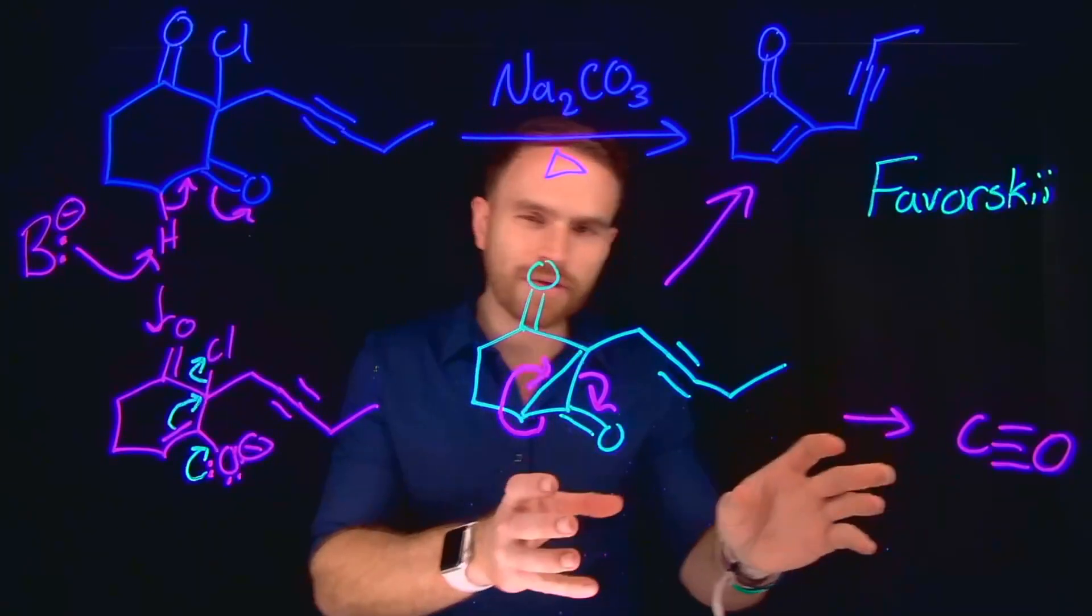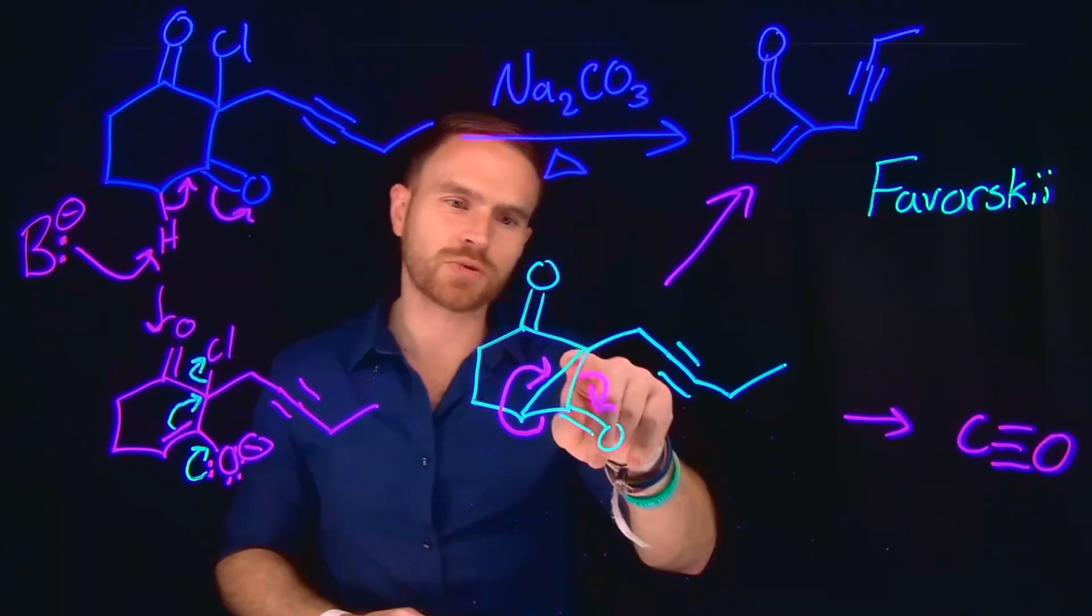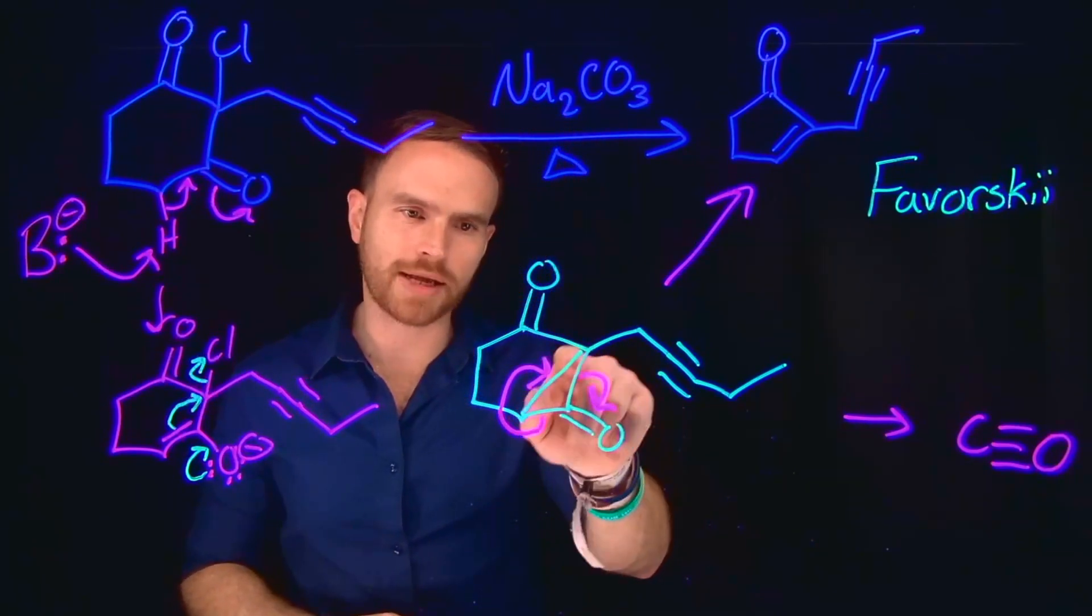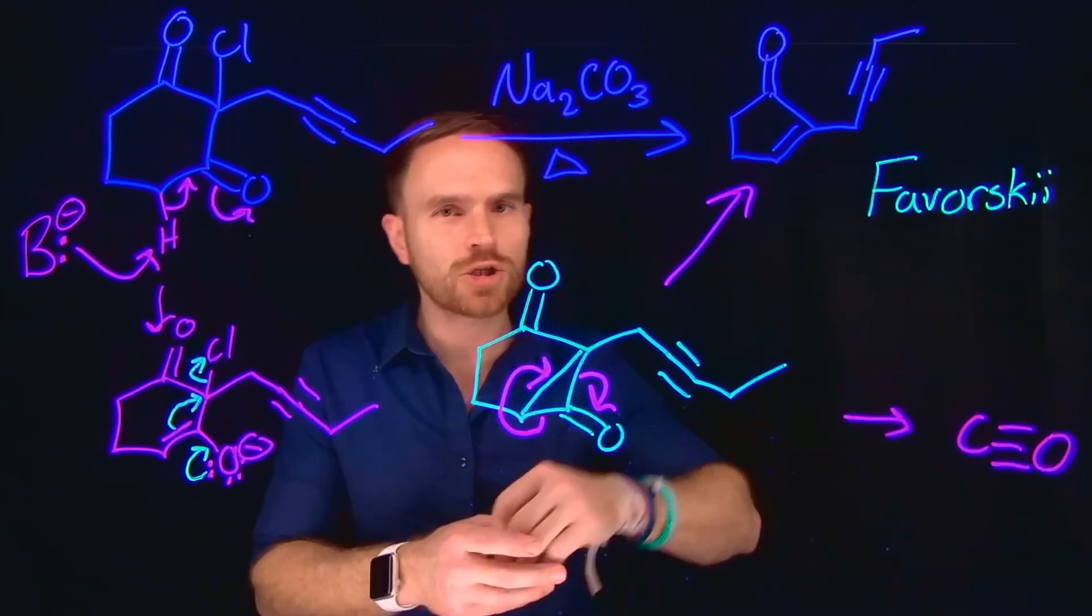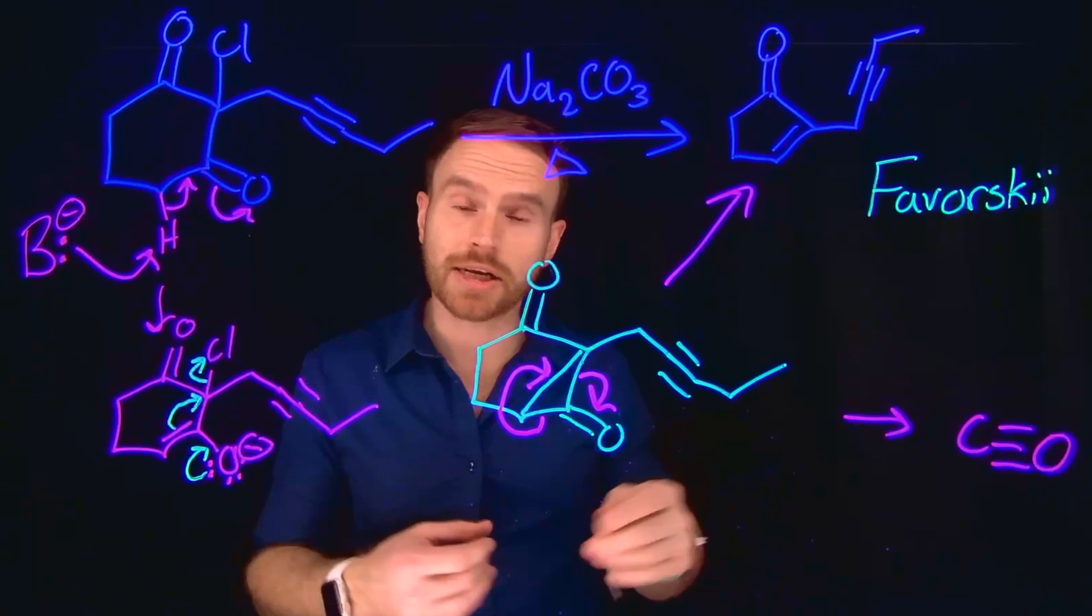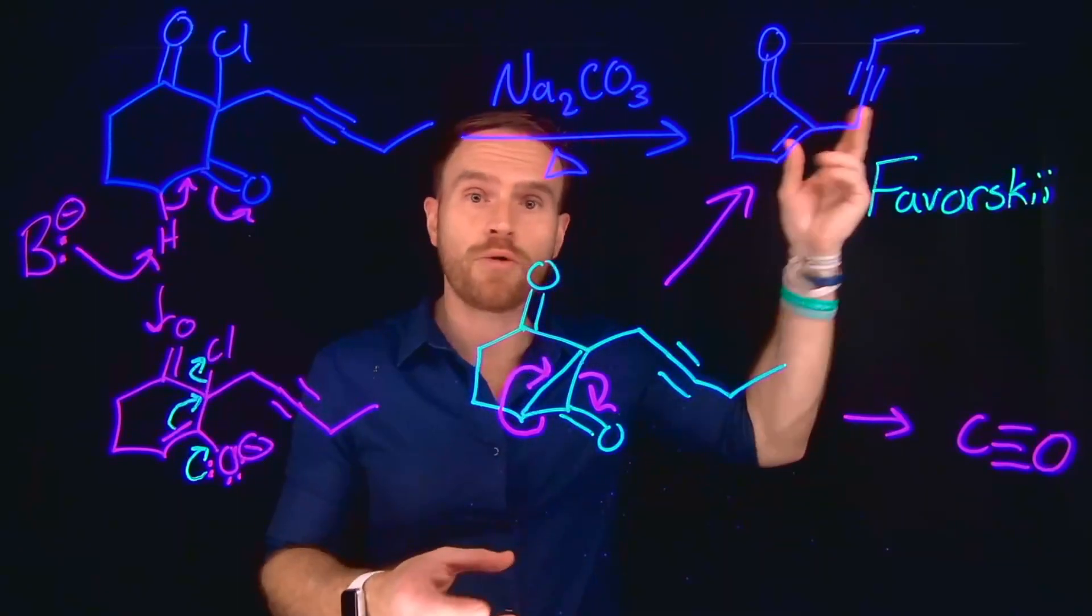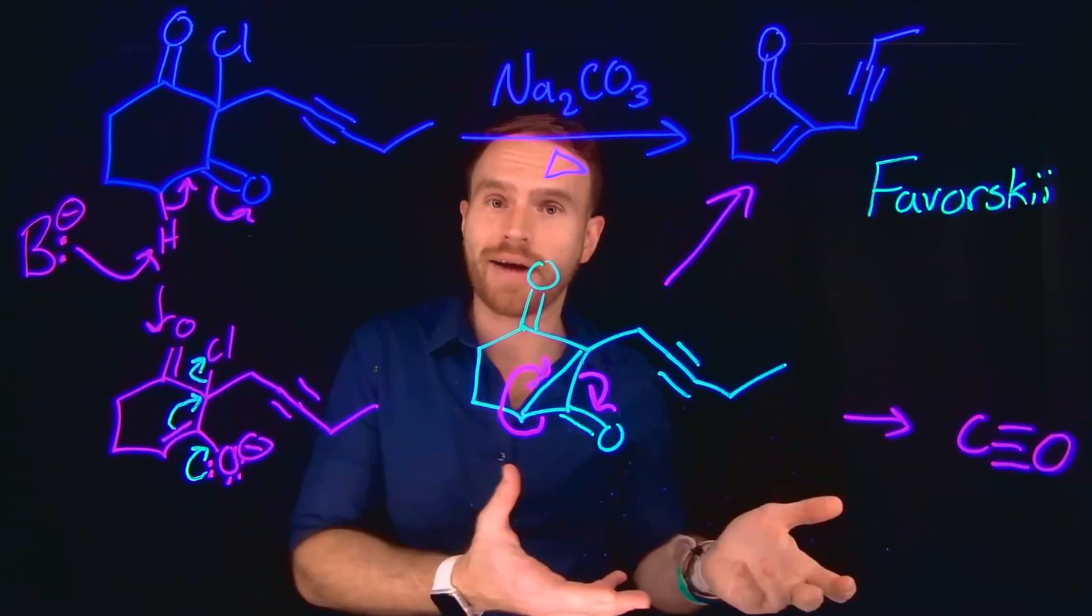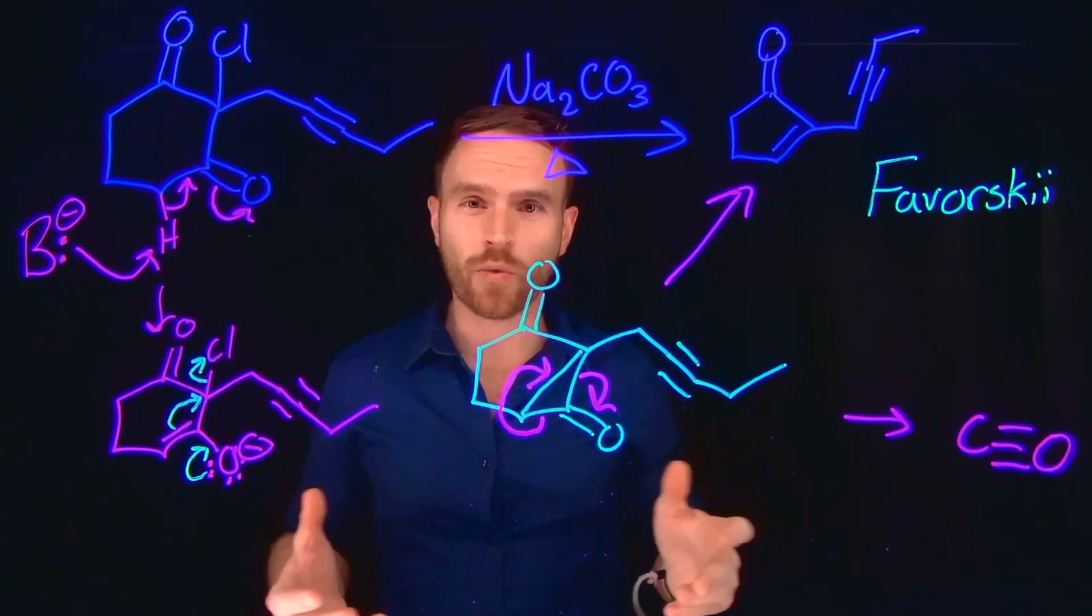And we have this driving force that is so powerful that will allow us to do this transformation because we're freeing up the ring strain as a part of this cyclopropanone and also generating a gas which would leave the system. Especially if you perform this reaction in an open flask, Le Chatelier's principle would lead us to believe that since we're removing products from the system, this would drive the reaction forward. And again, this is known as a Favorski rearrangement.